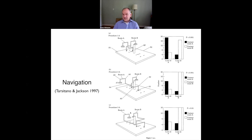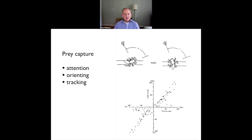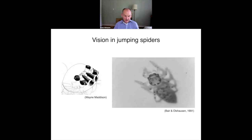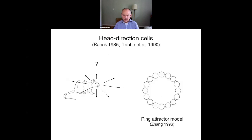All these experiments point to the idea that with their highly elaborate visual system, jumping spiders are using very rich visual information to build internal models of their environment, doing some kind of three-dimensional reasoning about the world in novel situations in order to find objects.